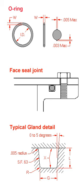An O-ring, also known as a packing or a toric joint, is a mechanical gasket in the shape of a torus. It is a loop of elastomer with a round cross section, designed to be seated in a groove and compressed during assembly between two or more parts, creating a seal at the interface.